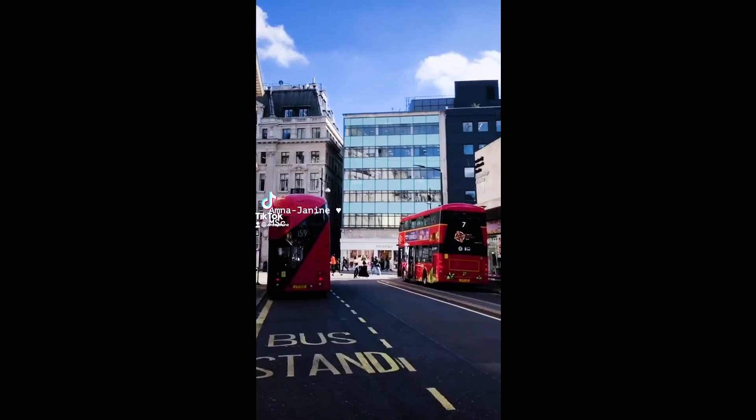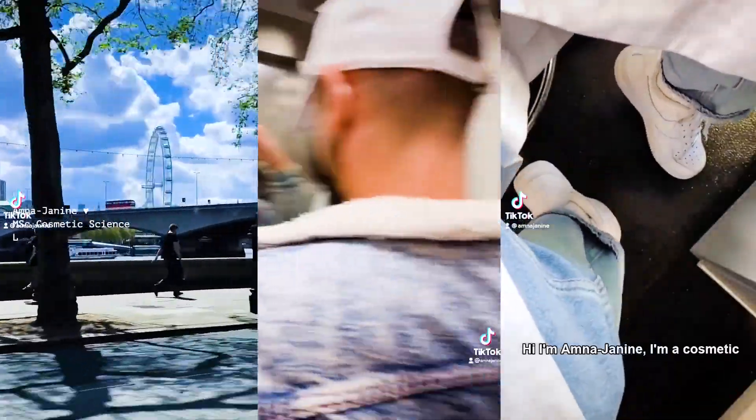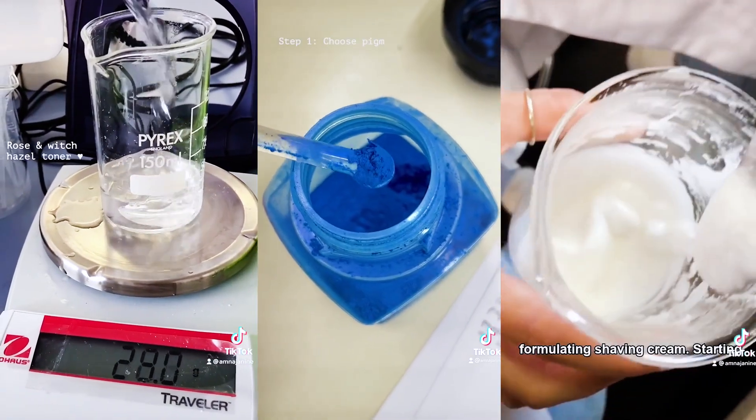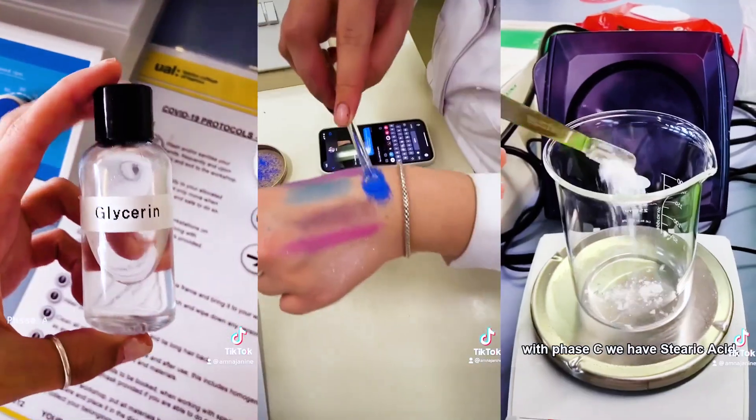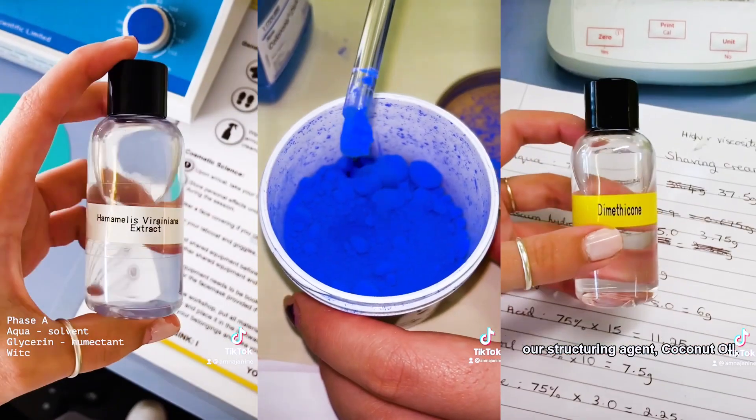Hi, my name is Amna Janine. I'm an MSc Cosmetic Science student at London College of Fashion. And this is Come to Lab With Me, eyeshadow edition. First things first, we had to choose a pigment and pearlescent. So we went on a little swatching spree and ended up going for this beautiful blue.